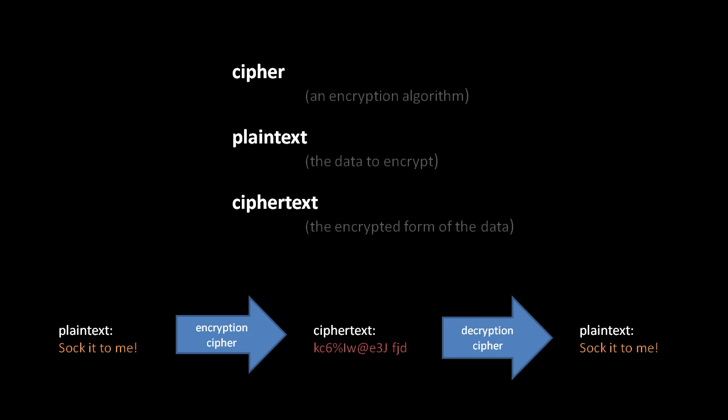In any case, in this example here, if we have the plaintext reading socket to me exclamation mark, and then we run that through an encryption cipher, we get out a ciphertext, which who knows what it looks like, just a bunch of bits, which in ASCII would probably look something like a bunch of garbage characters, maybe something like this. And then we run that ciphertext back through the decryption cipher, and we get back out the plaintext, so we get back the original message.